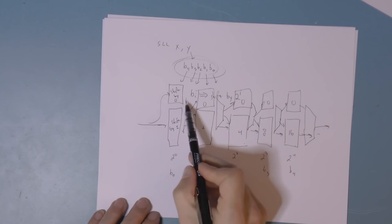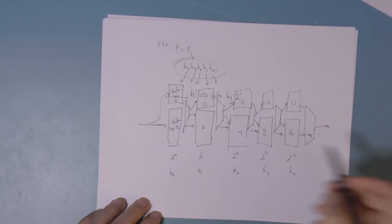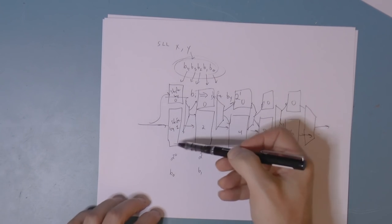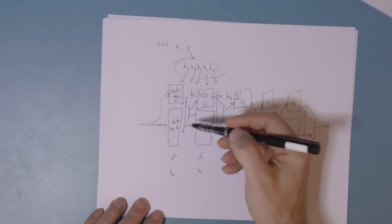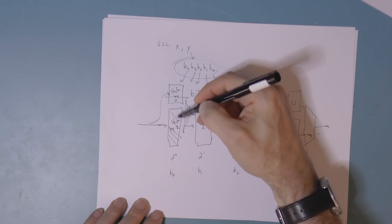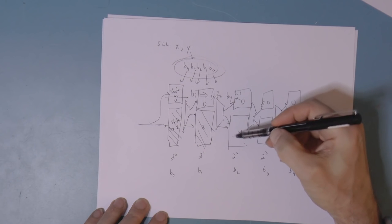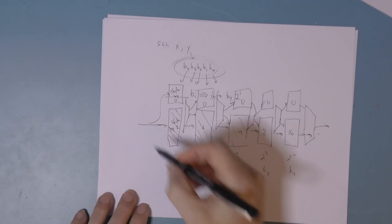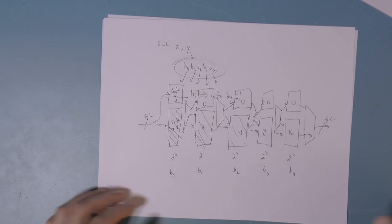A shift by zero is just a wire, and a shift by one is a fixed shift. The way I'm going to accomplish this is not through multiplexers and shifters, but through tri-state buffers. The idea is that we have our 32 bits coming in and we need to either shift by one or shift by zero.